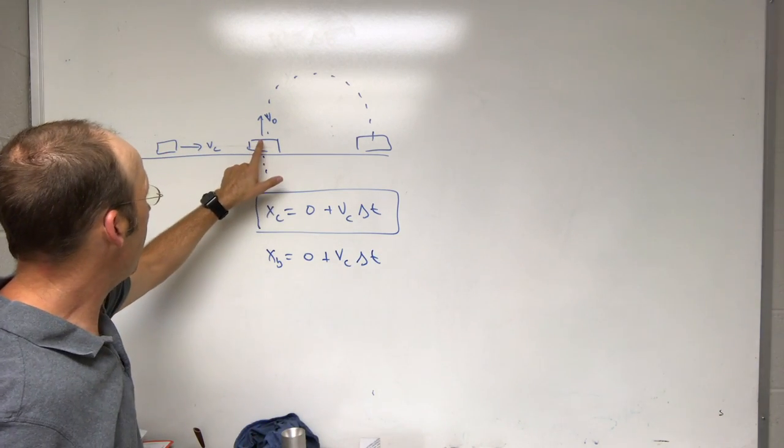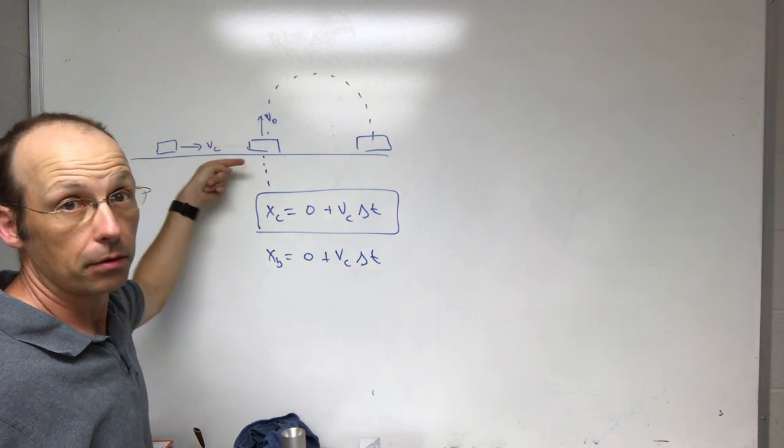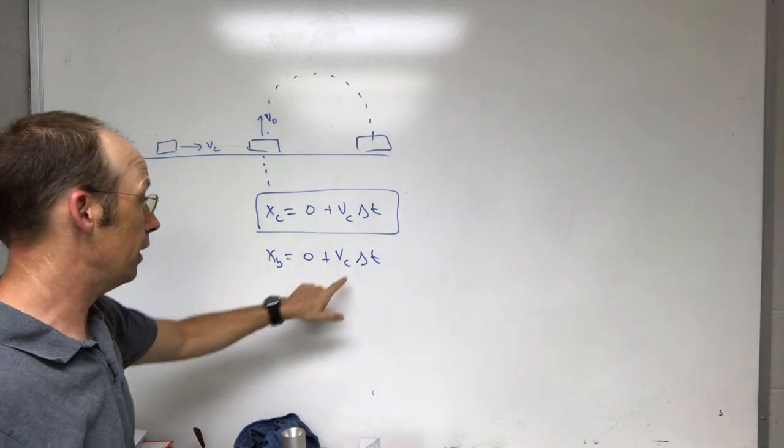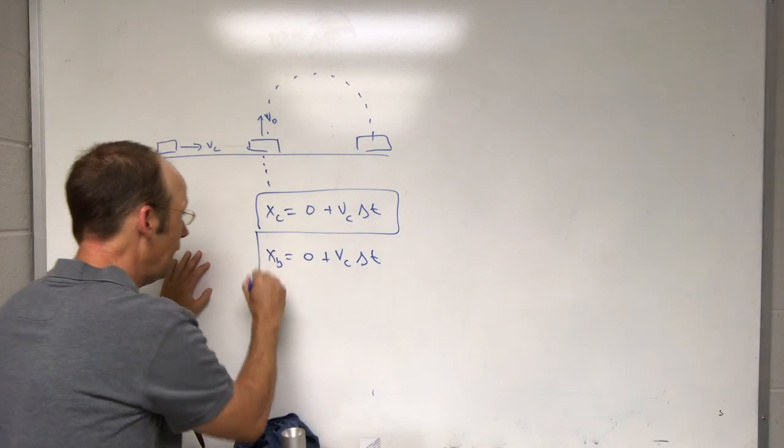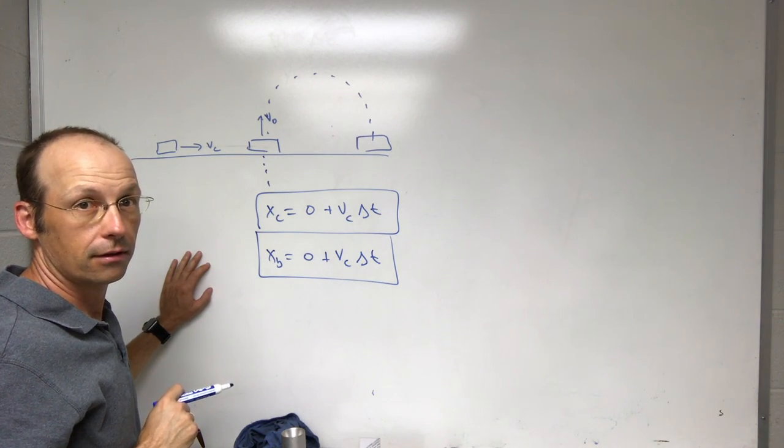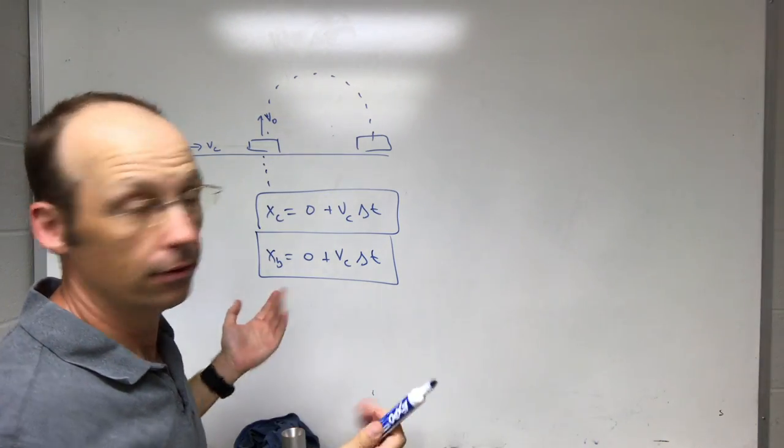Because when I launch this ball, it's moving v_0 in the vertical direction, but it's moving at v_c in the horizontal direction. So its horizontal velocity is v_c, so it has the same equation as the cart. Its position this way is going to stay the same. That's why it lands.